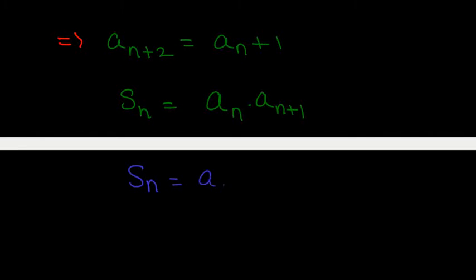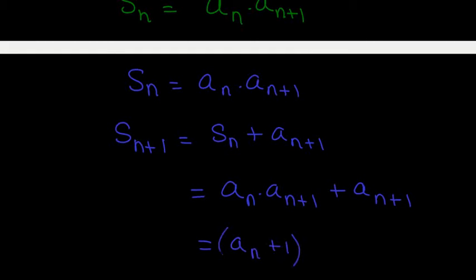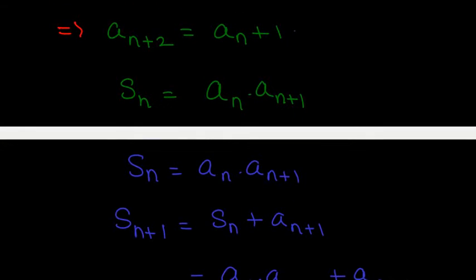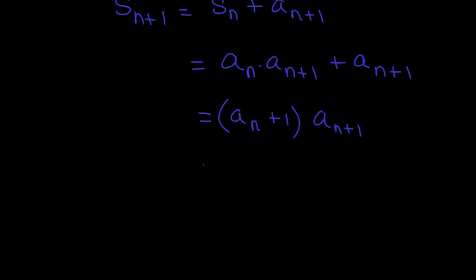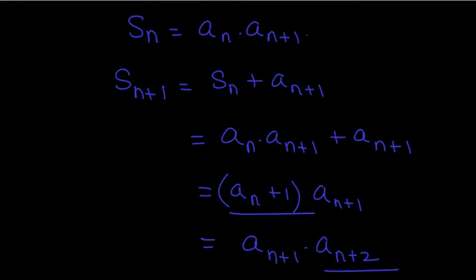Suppose S_n equals a_n times a_{n+1}. Consider S_{n+1}: it equals S_n plus a_{n+1}, and by the inductive assumption S_n equals a_n times a_{n+1}. This gives a_{n+1} times a_{n+1}, and by the recurrence relation a_{n+1} equals a_{n+2}, so this becomes a_{n+1} times a_{n+2}. This proves that in general S_n equals a_n times a_{n+1}, so the (n+1)th term divides S_n — everything checks out.